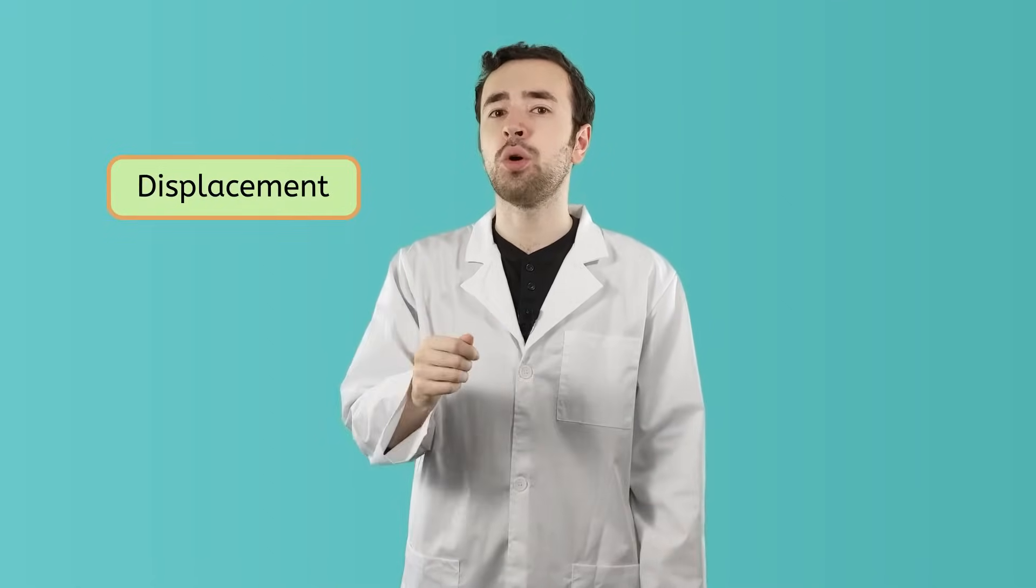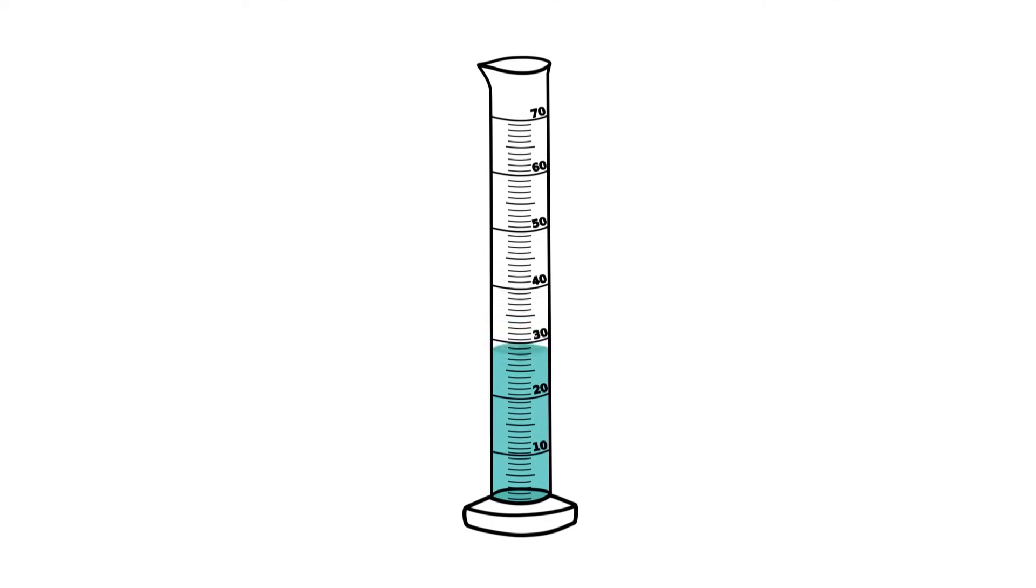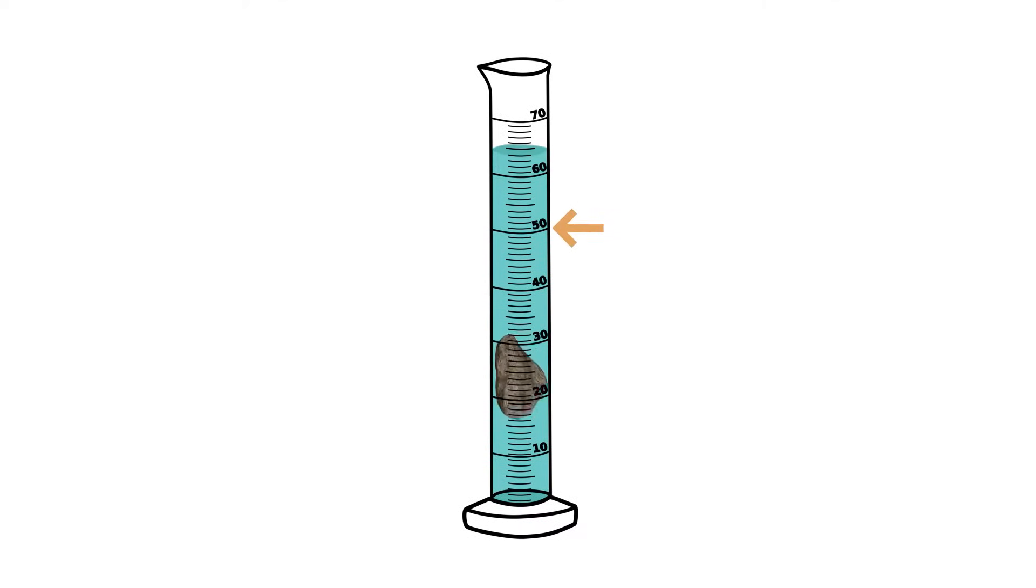So we can find the volume of a liquid by pouring it into a graduated cylinder. But how do we measure the volume of a solid? Remember, solids have a definite shape to them. So we can't just pour it into a container and have it turn into that shape like we can with a liquid. Instead, one of the ways to find the volume of a solid is to place it in liquid and see how much liquid it pushes out of its way. It's just like you making a big splash when you jump into a pool. This is called displacement.